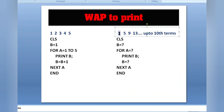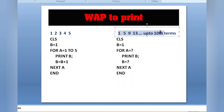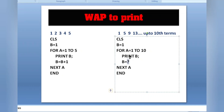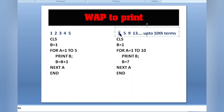The basic structure for printing any pattern is the same. Three things change: the first value (b equals to), the for loop range, and the formula. For the next pattern — first value is 1, up to the 10th term so the loop runs 1 to 10, and each step adds 4 (1, 5, 9, 13...), so the formula is b equals to b plus 4.